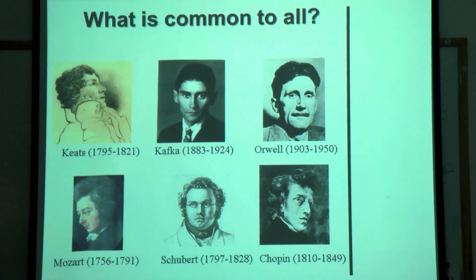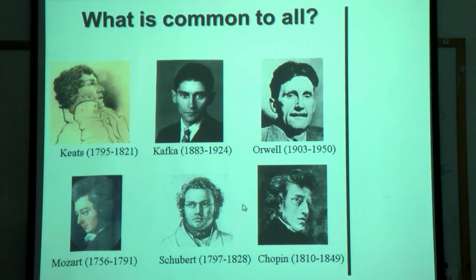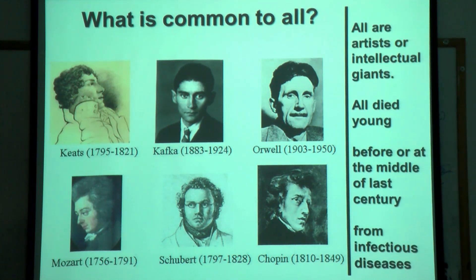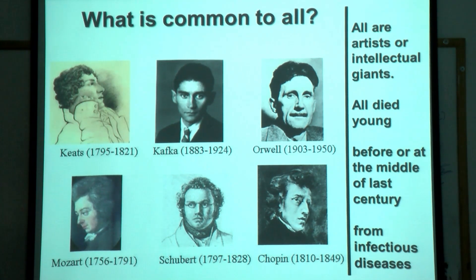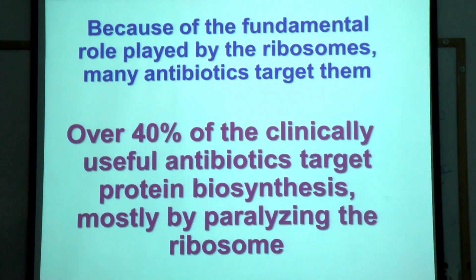Now let's look at these people — all of them are giants, either in music like Mozart, Chopin, Schubert, or very intellectual writers. What is common to all of them is they died very young; the oldest was only 47. They all died before or at the middle of last century. What you cannot see in the picture but I can tell you is they all died from infectious diseases that people don't die from now. What happened? In the middle of last century, antibiotics came into use and they saved the lives of many, many people, extending lifespan.